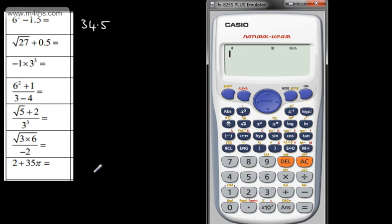Okay, let's look at the next one. We've got 2 plus 35 pi. Pi is down the bottom. We hit shift and pi is just here. So that gives me exactly what it looks like on the paper and I go ahead and press equals.